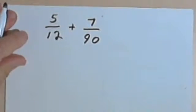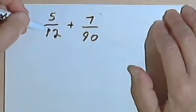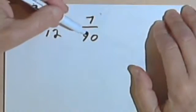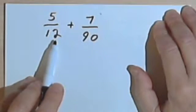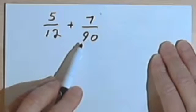So let's say we've got these two fractions, 5 over 12 plus 7 over 90, and we have to add them, and the denominators aren't the same, so we've got to find the lowest common denominator.